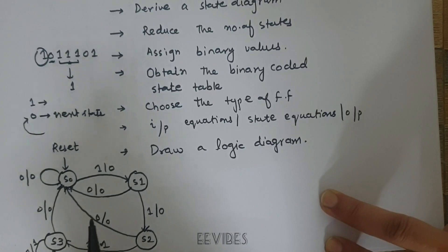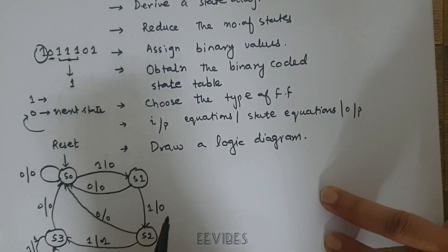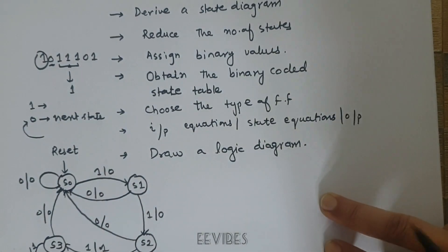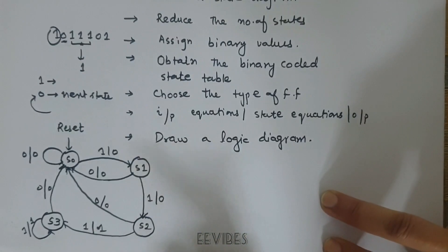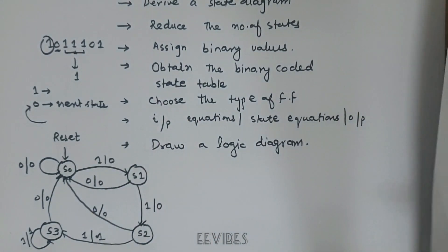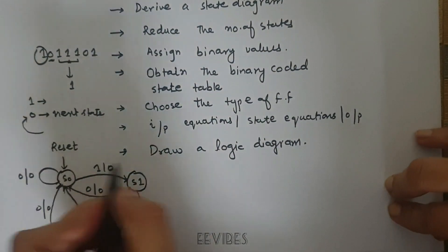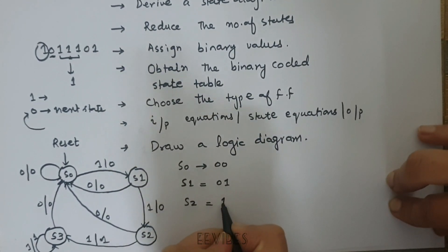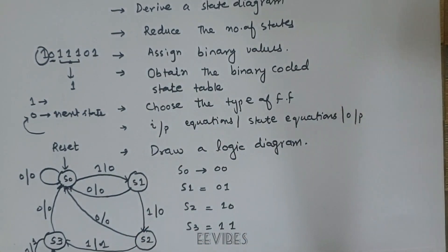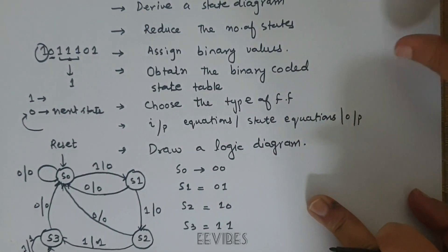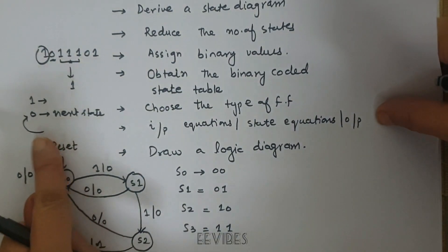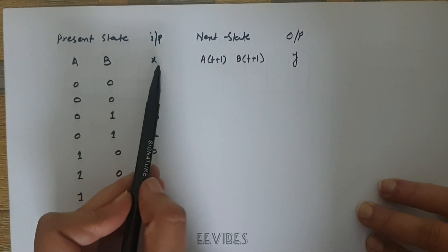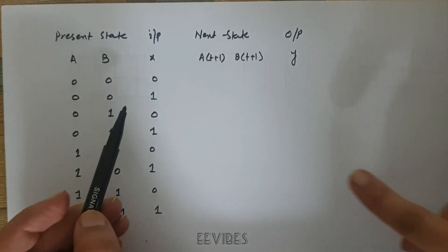There are four possible states required, which means we need two flip-flops, since two flip-flops represent two bits per state. We assign state S0 the code 00, S1 the code 01, S2 the code 10, and S3 the code 11. In the state table, A and B represent the present states of the flip-flops and X is the serial input.